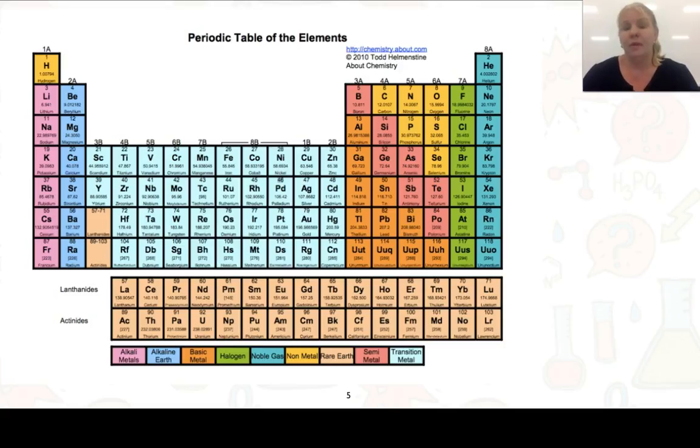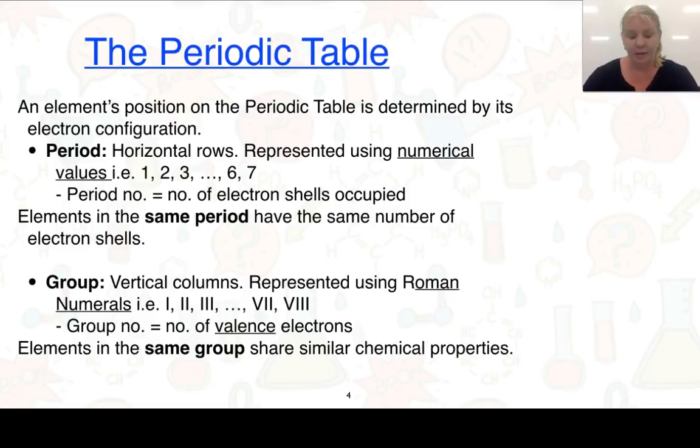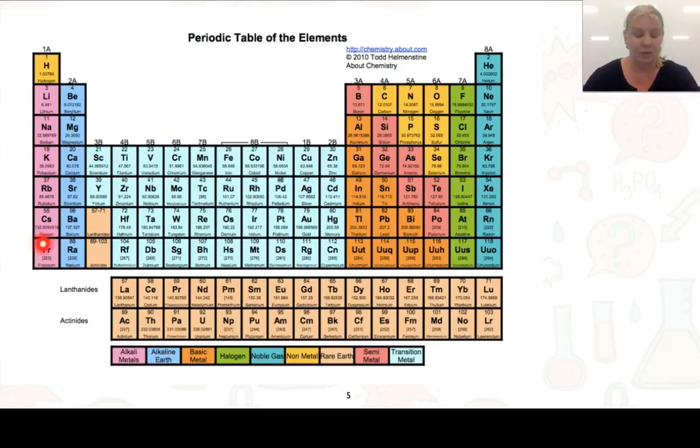Here's a periodic table. I would suggest that you get the periodic table that your teacher has given you and you could now do some labels. So we have the period numbers that we were given in the last slide, and they are our horizontal rows with numerical values 1, 2, 3, up to 7. I would recommend that you label them down the side of the periodic table here.